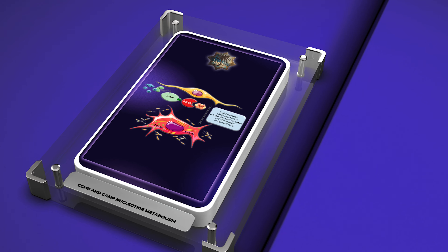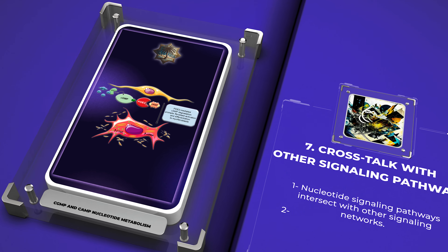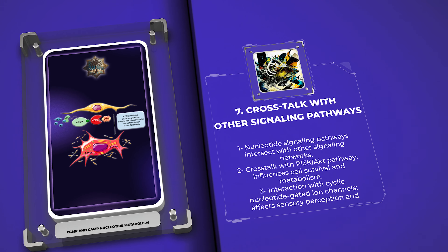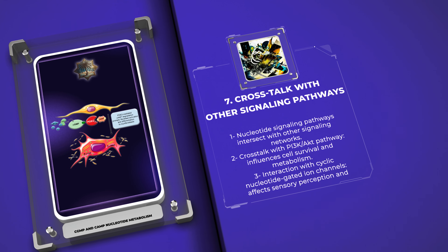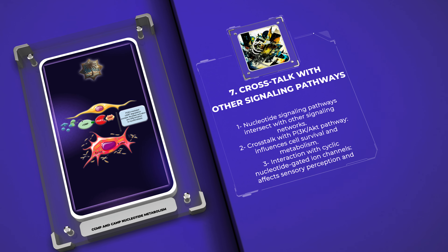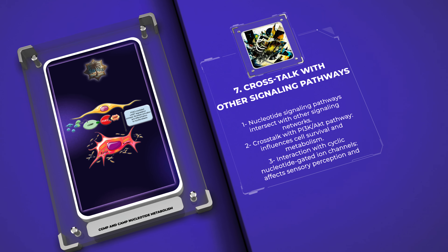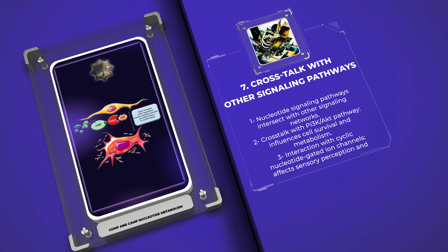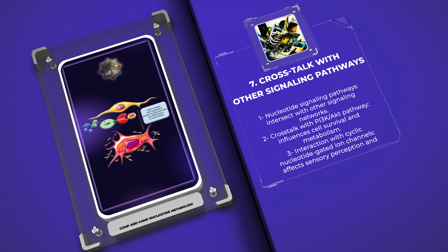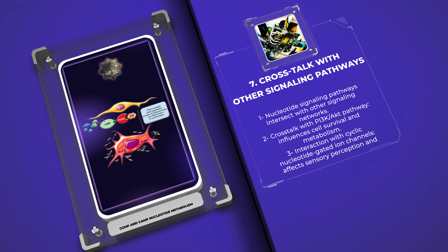Nucleotide signaling pathways often intersect with other signaling networks, allowing for intricate crosstalk and amplification of signals. For instance, the crosstalk between nucleotide signaling and the phosphoinositide 3-kinase (PI3K) / protein kinase B (Akt) pathway influences cell survival and metabolism. Similarly, the interaction between nucleotide signaling and the cyclic nucleotide-gated ion channels affects sensory perception and neuronal signaling. Understanding these crosstalk mechanisms reveals the intricate web of signaling pathways that control cellular functions.